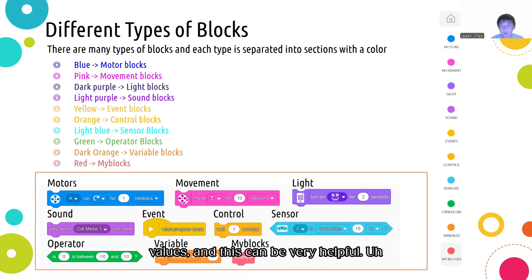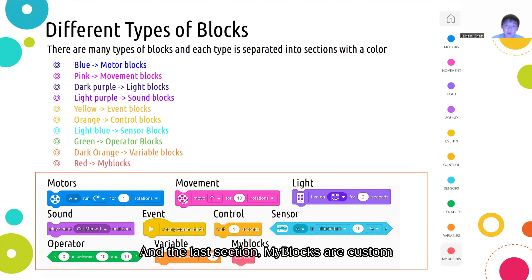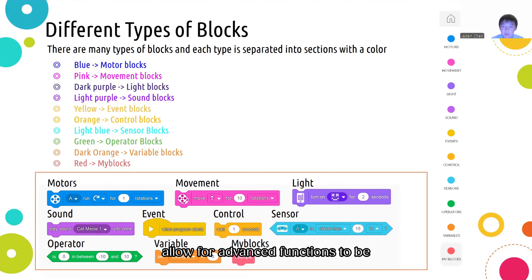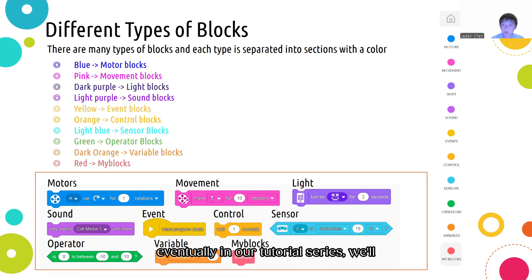The next one, variables, which are in the dark orange section, can store values and manipulate them throughout the program. And the last section, my blocks, are custom blocks that users will make, which can allow for advanced functions to be simplified into a single my block. This was only a brief introduction to all the blocks, and eventually in our tutorial series, we'll go deeper into all of them.